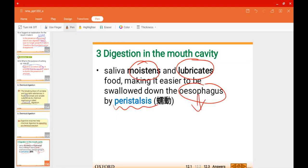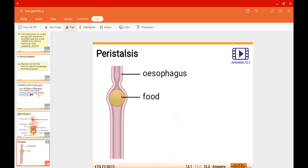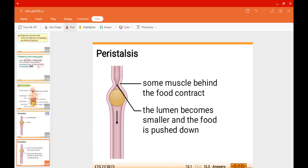For the esophagus, do you remember where it is? The esophagus is this really long tube over here. It connects the mouth cavity to the stomach. When our saliva helps to moisten and lubricate the food, there's muscle behind the food which will contract. The lumen, or the space that you can find in the esophagus, becomes smaller, and it squeezes or pushes the food downwards.